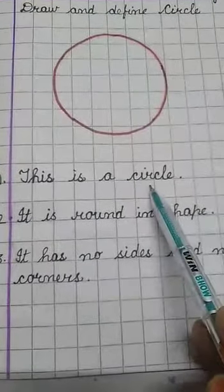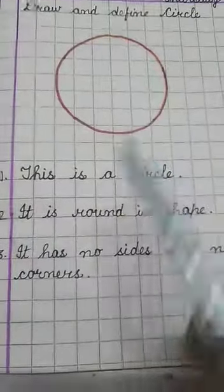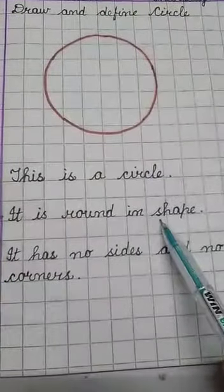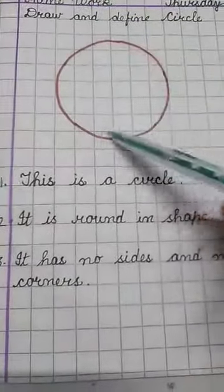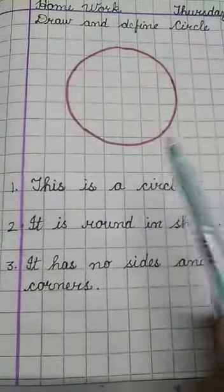This is a circle. It is round in shape. You can see it is round in shape, round all over.